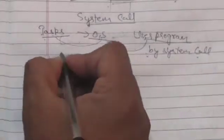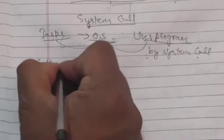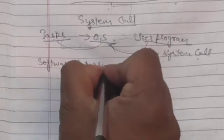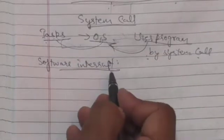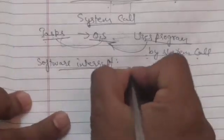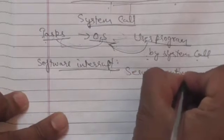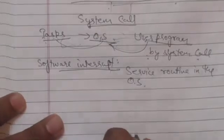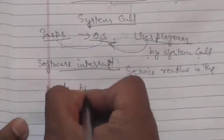Whenever a system call is executed, it is treated by the hardware as a software interrupt. The control passes through the interrupt vector to the service routine in the operating system, and the mode bit is set to kernel mode.